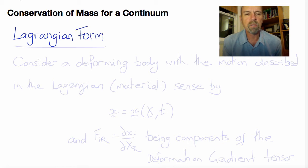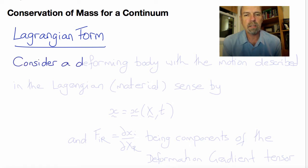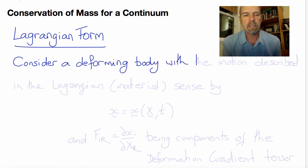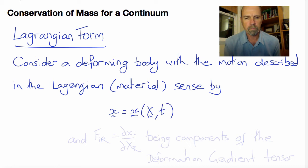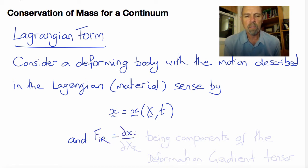First we'll derive the Lagrangian form of mass conservation. To do that we'll consider a deforming body with a motion described using a Lagrangian material representation as little x equals little x of big X and T. From this we can get the components of the deformation gradient tensor, F_IR, being the partial derivatives of little x_i with respect to big X_r.